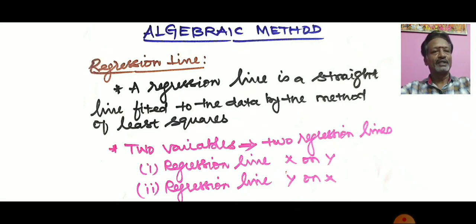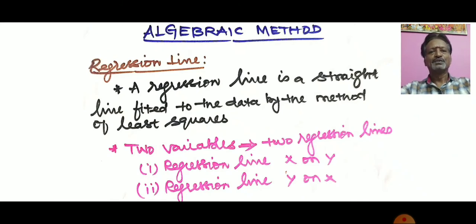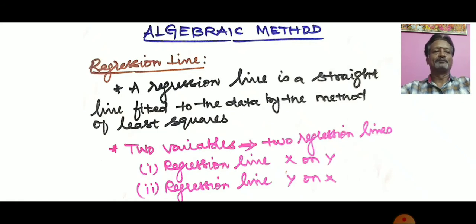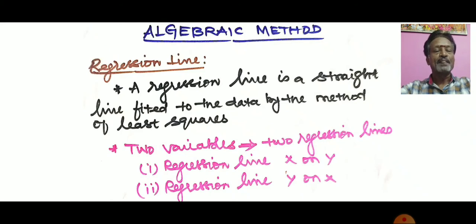Before entering into the calculation or estimation of regression, we need to know what a regression line is and what a regression equation is. A regression line is a straight line fitted to the data by the method of least squares. When we have two variables, there are two regression lines: one is the regression line x on y and another one is the regression line y on x.